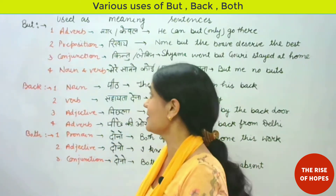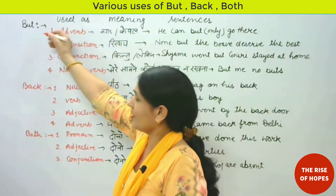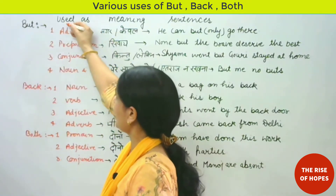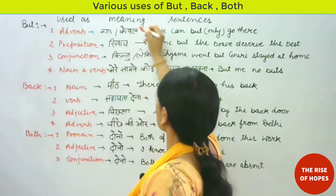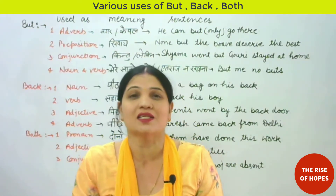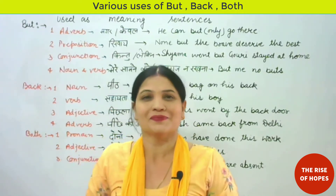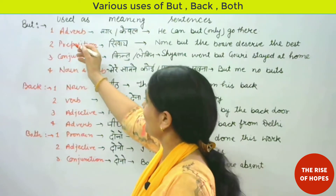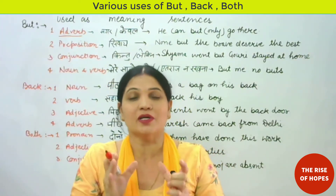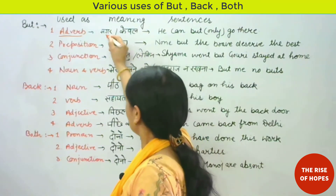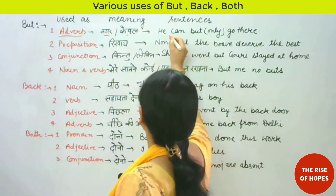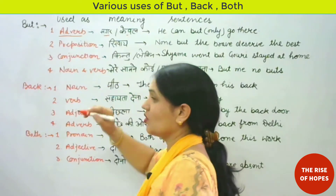So be ready — here is 'but'. In which contexts can we use 'but'? Here I have written the uses along with meanings and example sentences for easier understanding. The first use is as an adverb. 'But' used as an adverb means 'only' or 'merely'. Example: 'He can but go there.'